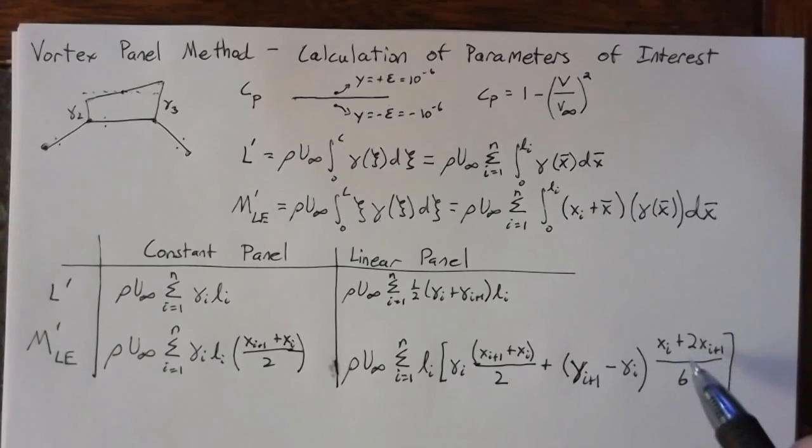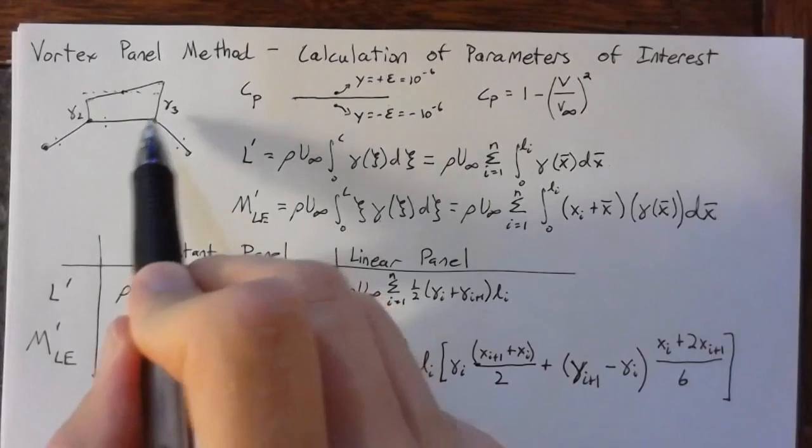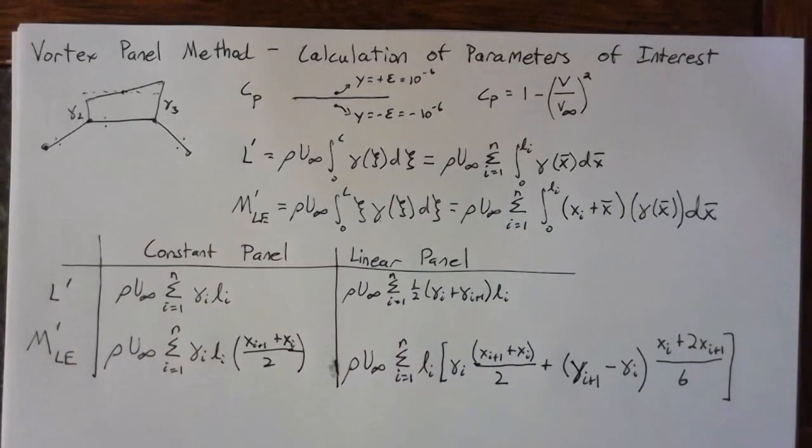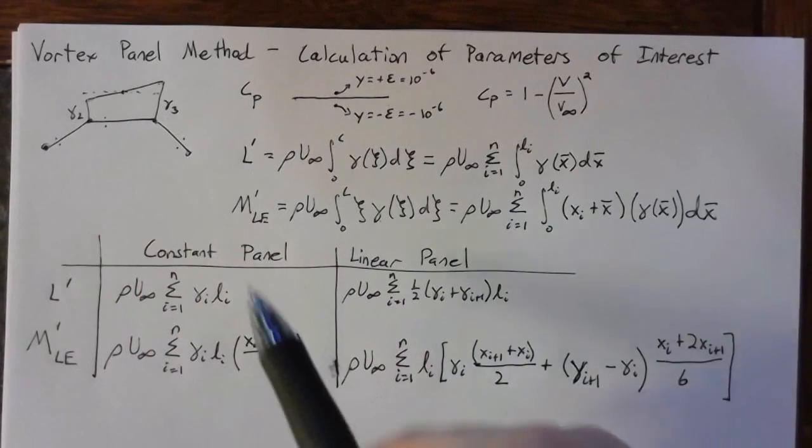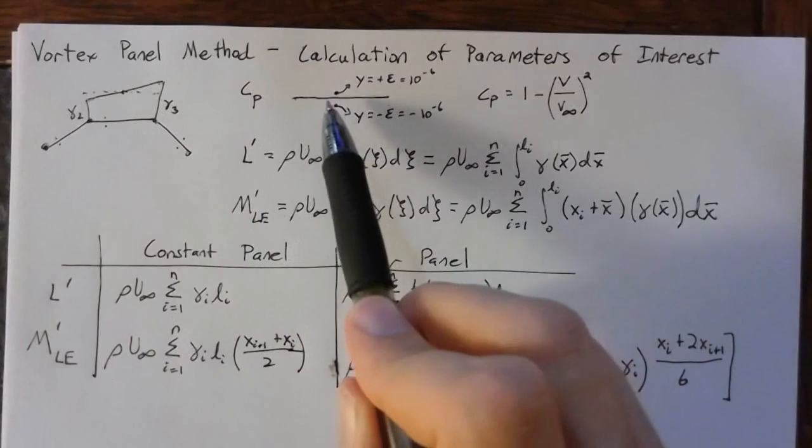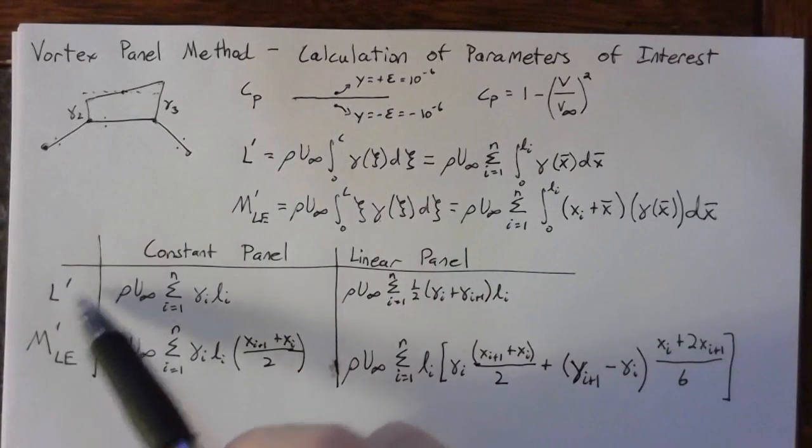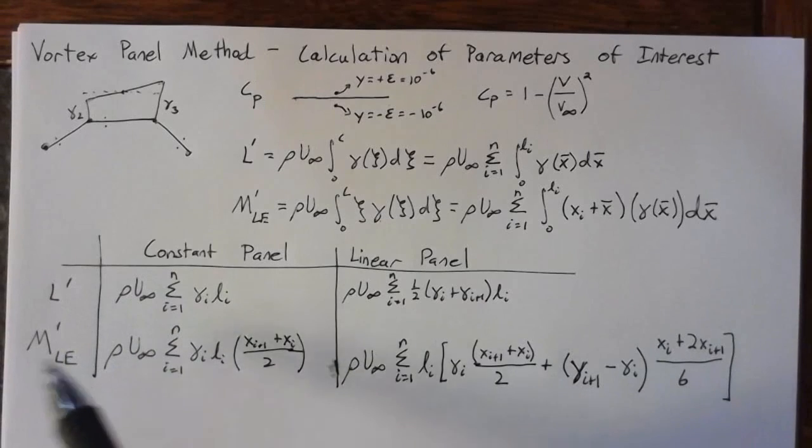So this location is skewed towards the right side of our panel. And now we have the Cp for our vortex panel method, along with the lift in moments about the leading edge. Thank you.